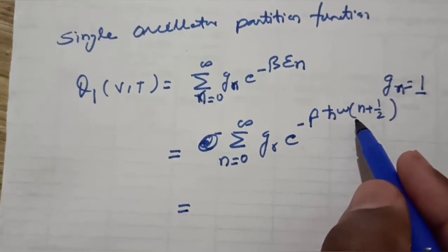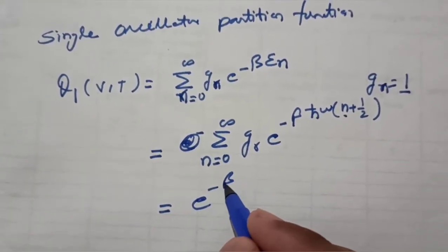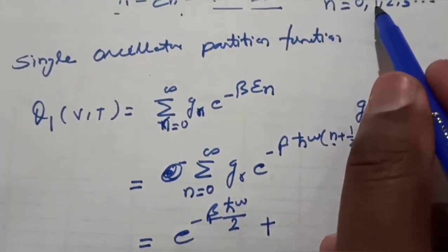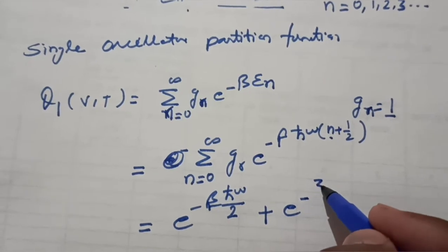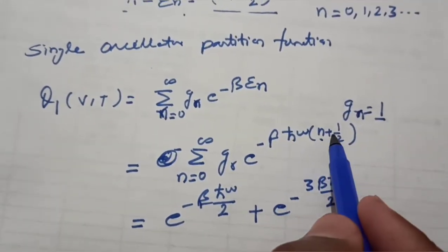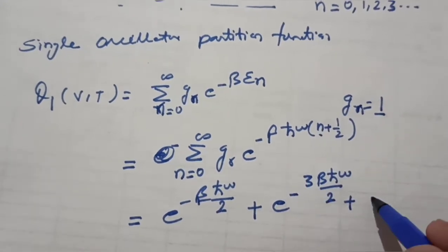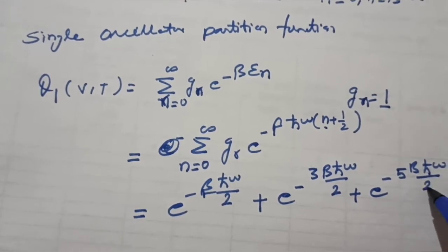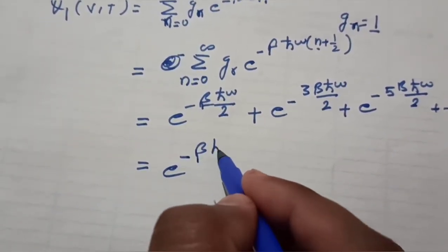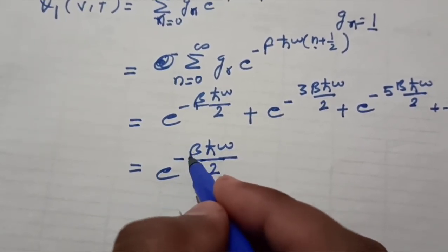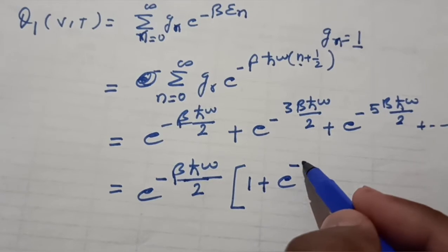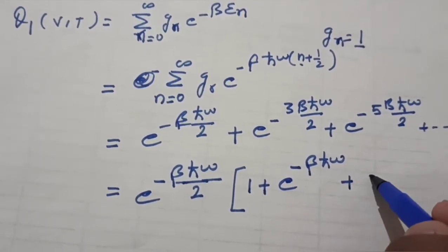Expanding the terms: when n equals 0, we get e to the power of minus beta h-bar omega over 2; when n equals 1, we get e to the power of minus 3 beta h-bar omega over 2; when n equals 2, we get e to the power of minus 5 beta h-bar omega over 2; and so on.